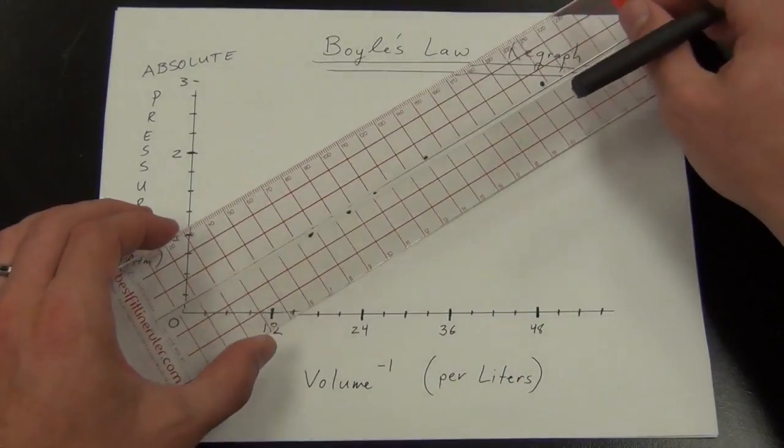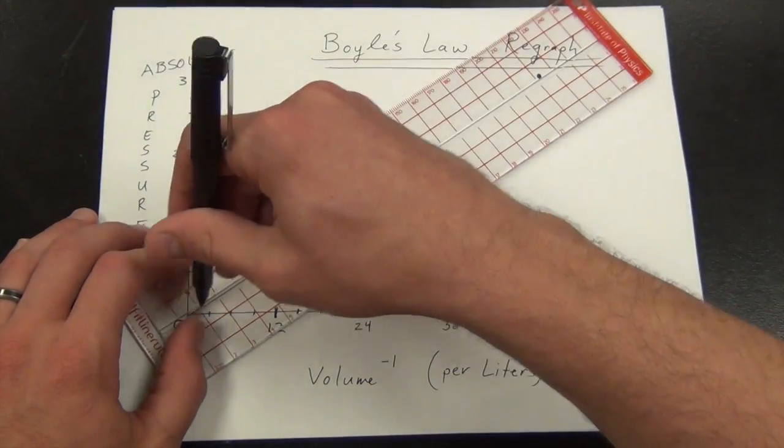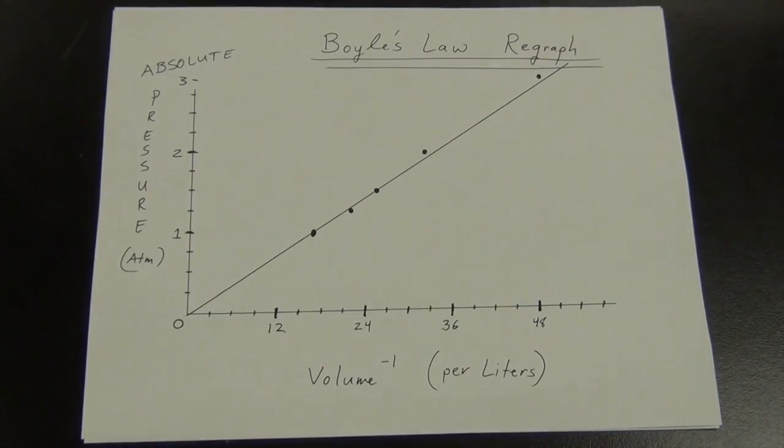Answer? You just graph the inverse of the volume. As the inverse of the volume goes up, the pressure goes up.